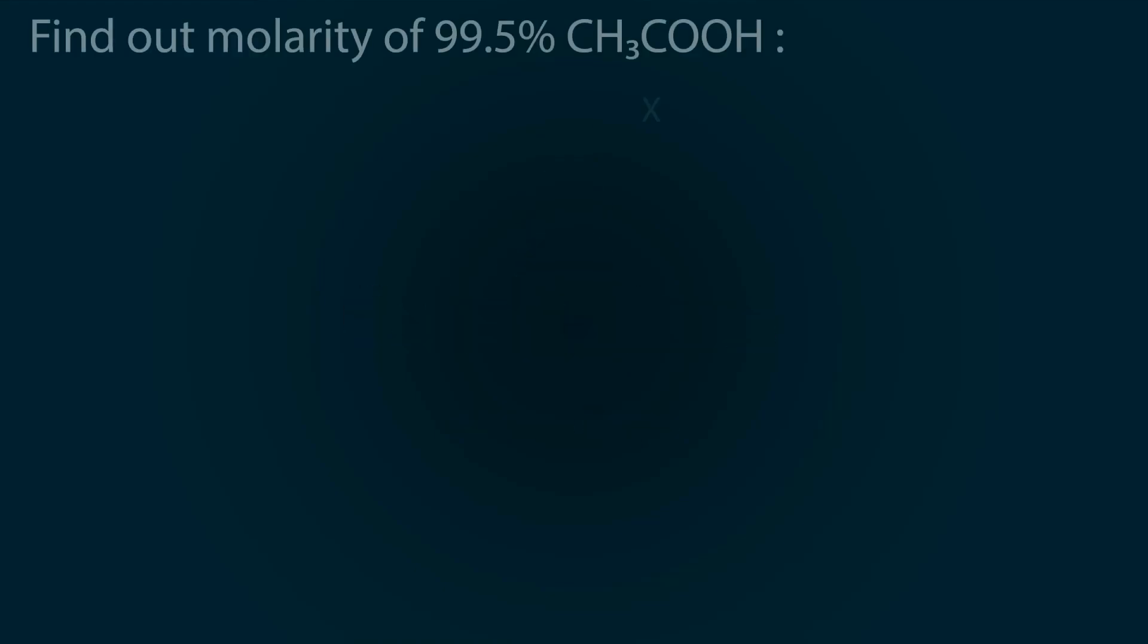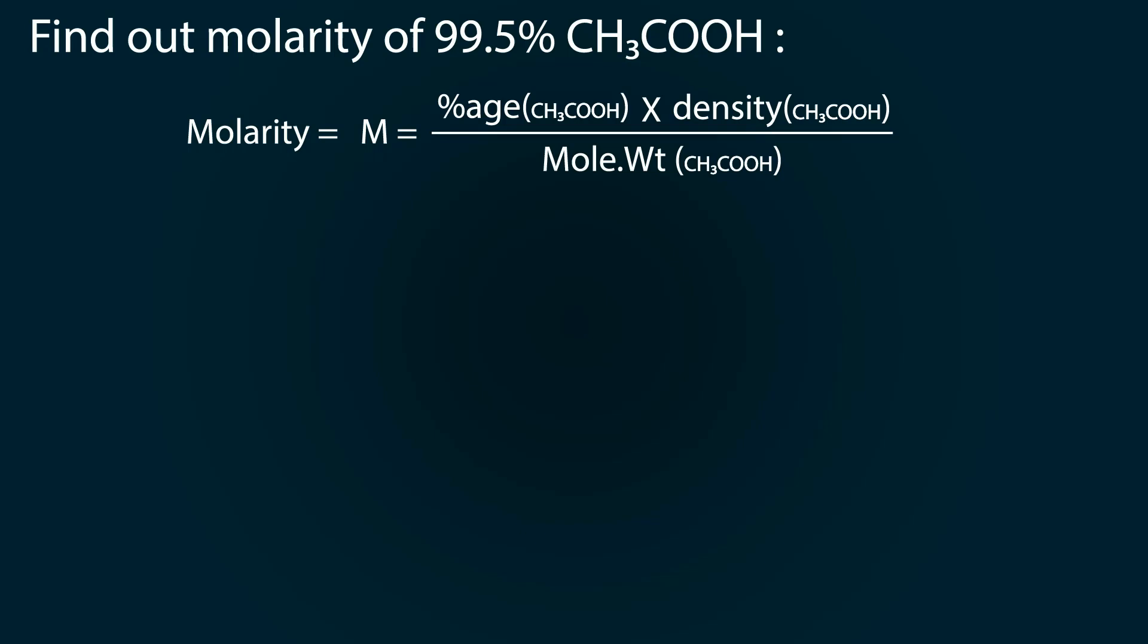Let's do some calculations. First of all we have to find out the molarity of 99.5% acetic acid. The formula of molarity is percentage multiplied by density, whole divided by molecular weight, whole multiplied by 10. The percentage is 99.5%, the density is 1.05.